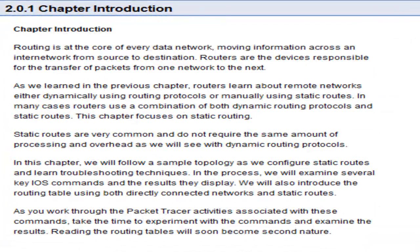Routing is at the core of every data network, moving information across an inter-network from source to destination. Routers are the devices responsible for the transfer of packets from one network to the next. Routers learn about remote networks either dynamically using routing protocols or manually using static routes. In many cases, routers use a combination of both dynamic routing protocols and static routes. This chapter focuses on static routing, which does not require the same amount of processing and overhead as dynamic routing protocols.